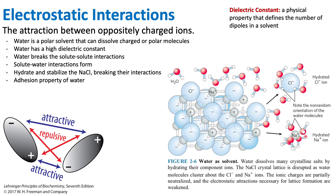We see water associating itself with each of those ions. Importantly, this arrangement of water molecules around each ion is not random — it is ordered. The partial positive charges of the water are interacting with the negative chloride ion.